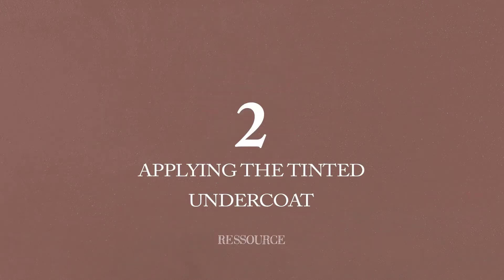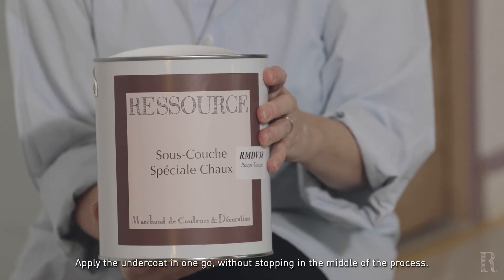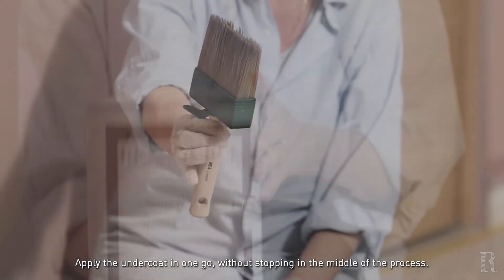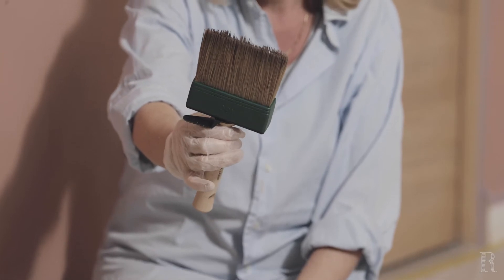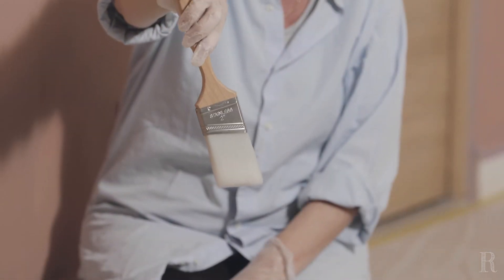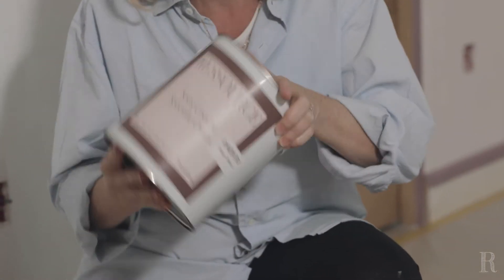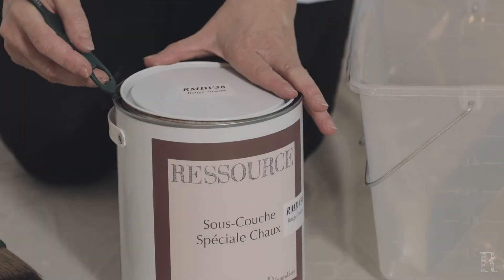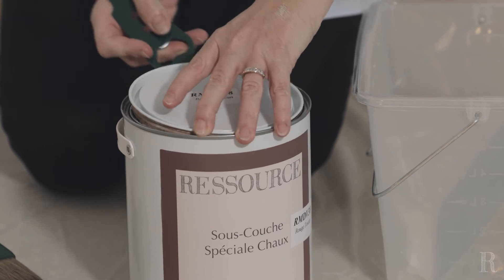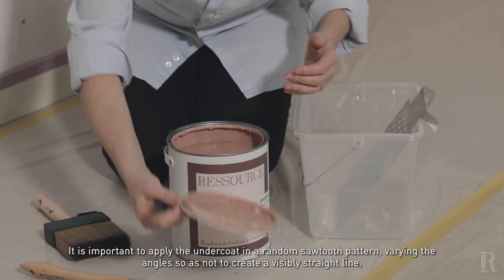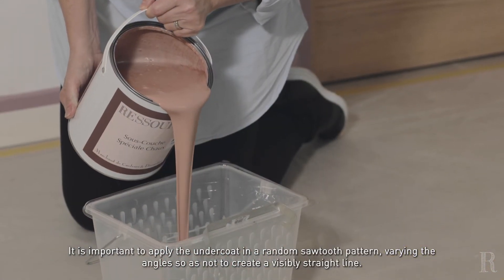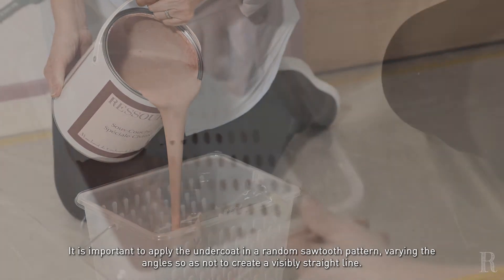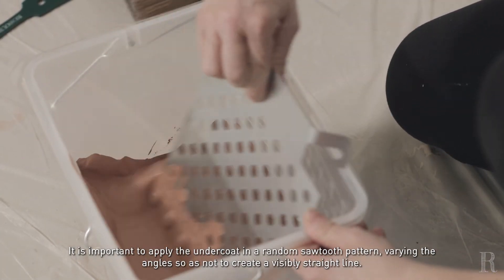Laissez sécher 12 heures. Appliquez la sous-couche en une seule fois sans vous interrompre dans votre travail. Il est primordial d'appliquer la sous-couche de façon aléatoire et en dents de scie, en variant les angles pour ne pas créer de lignes droites visibles à l'œil.